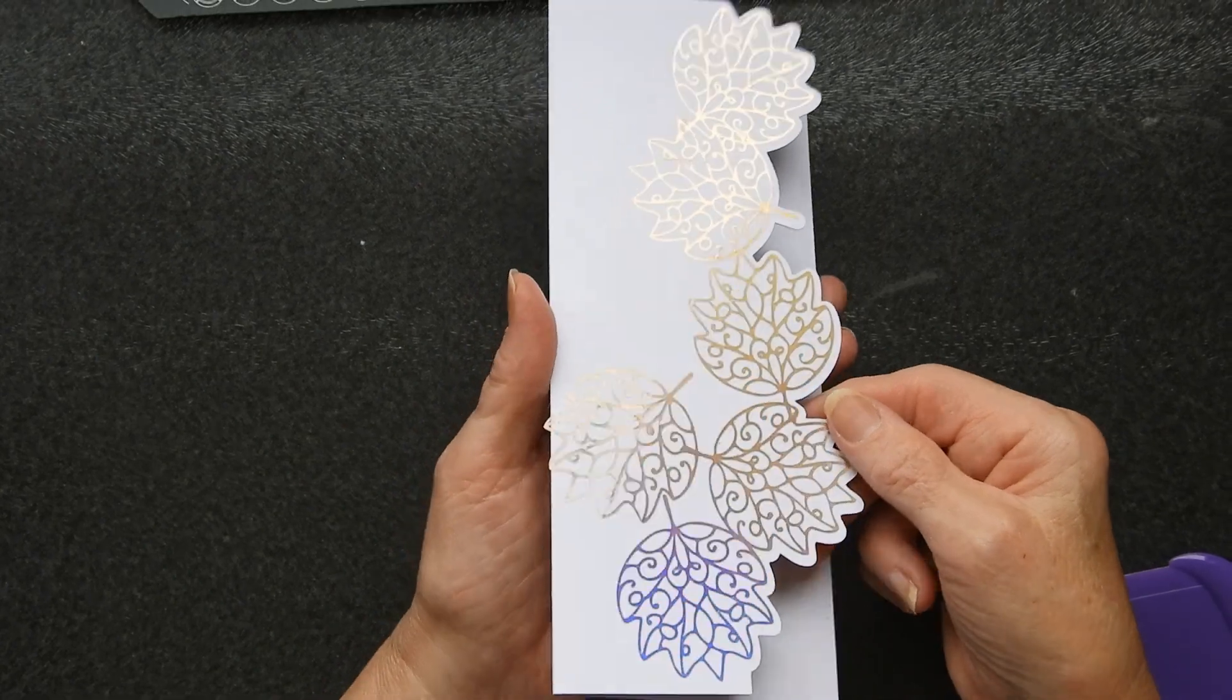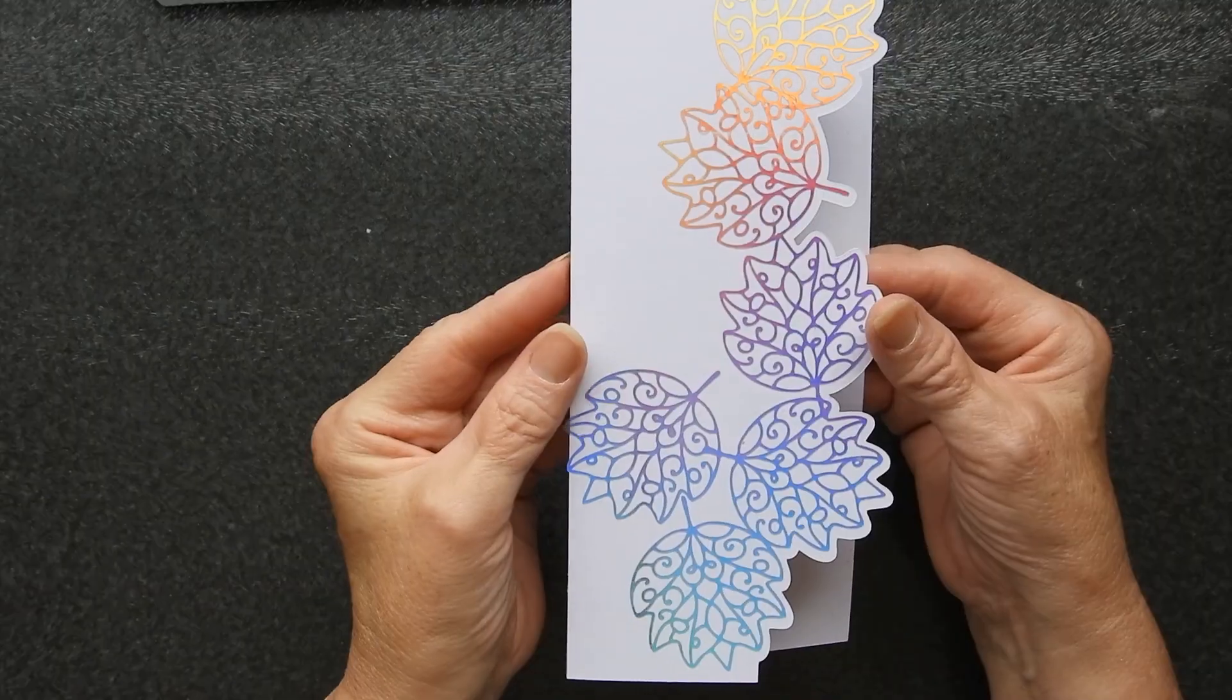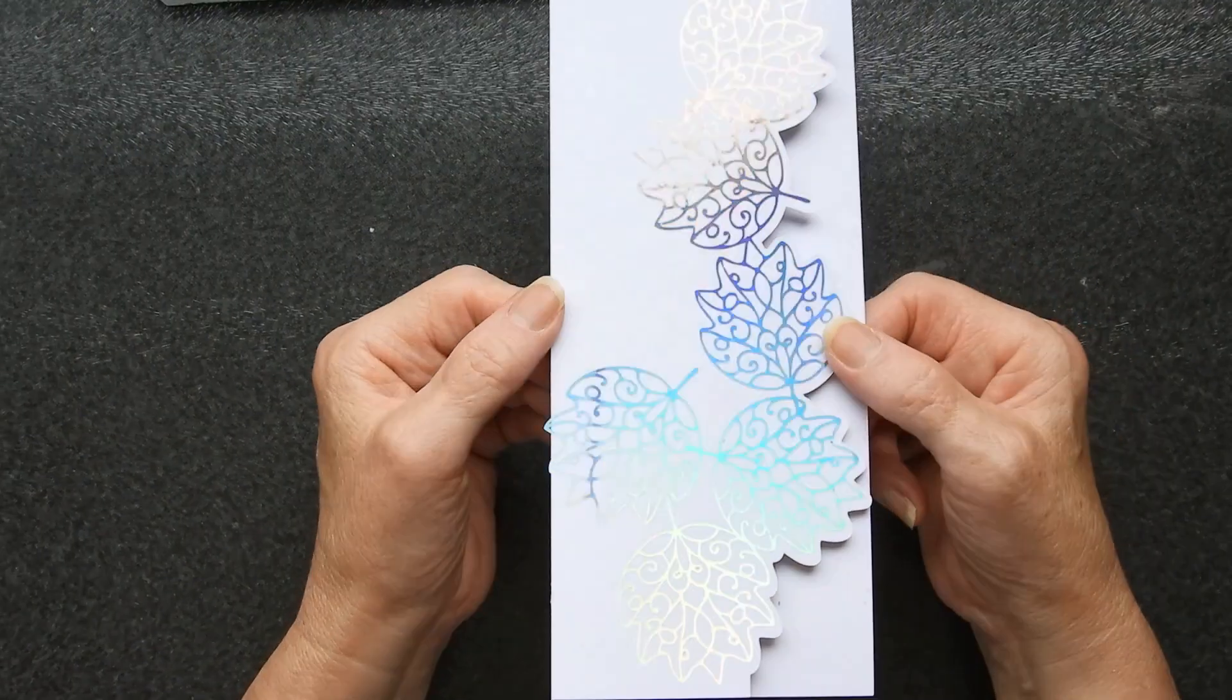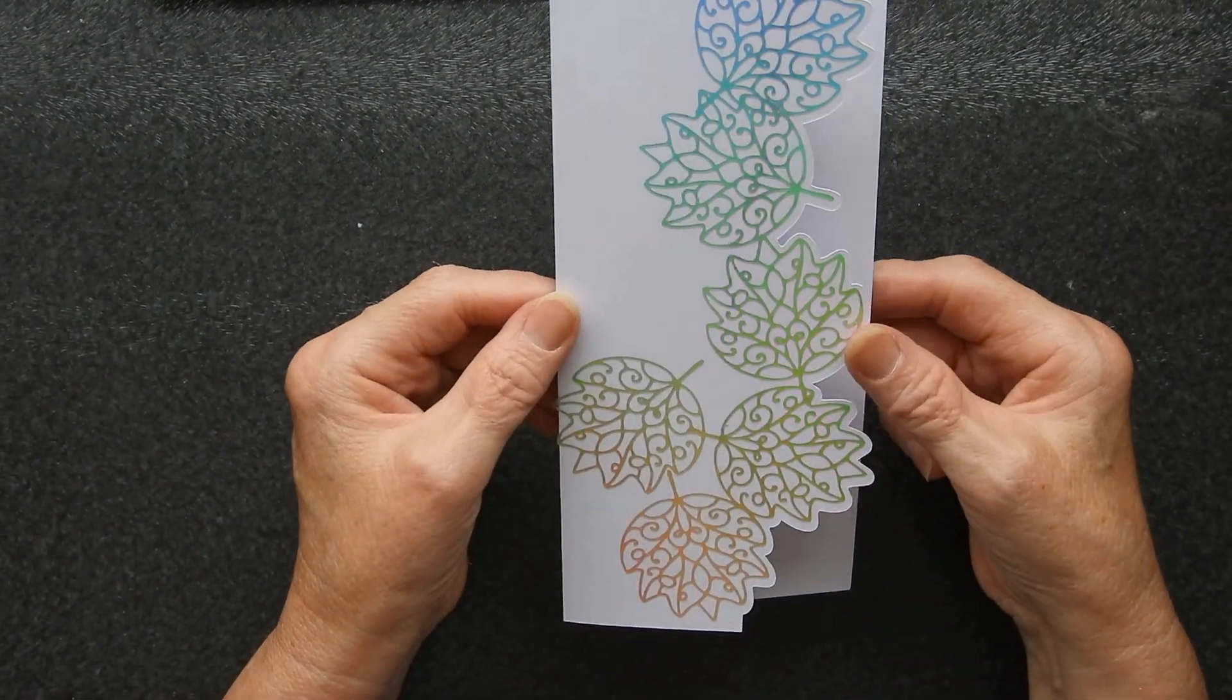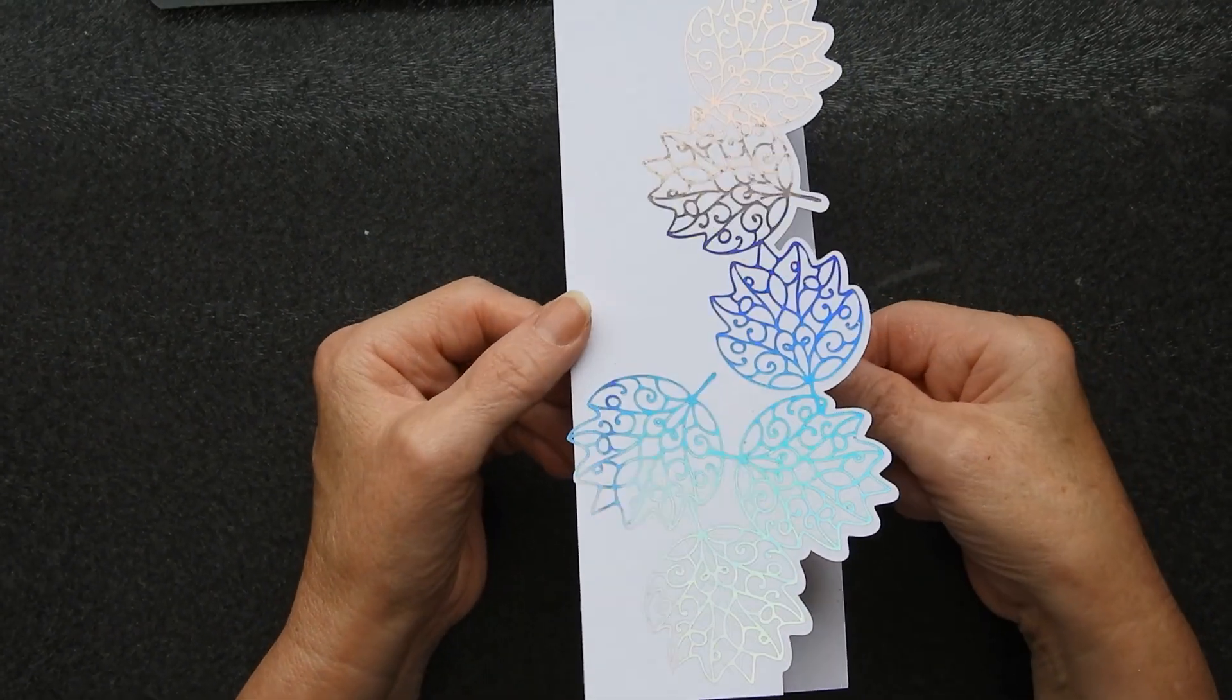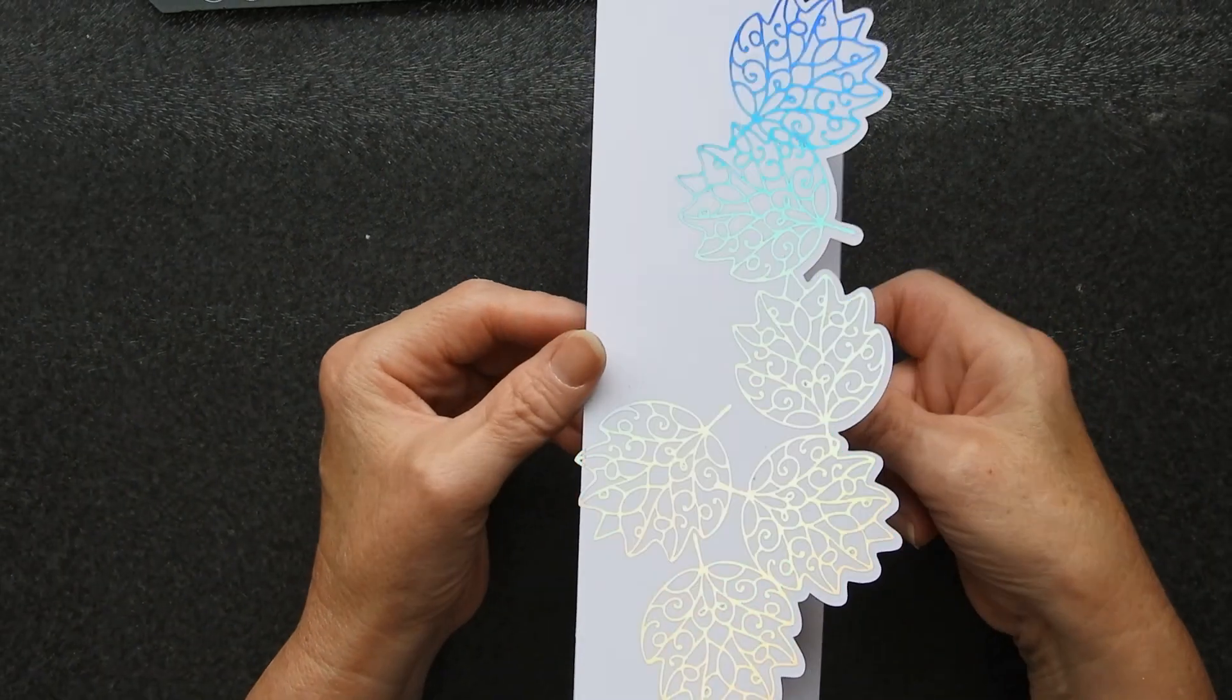And there I have my card. Very, very simple, very classic and very delicate looking. And I really quite like that. Now all you have to do is to put a sentiment inside. I think that works out really quite well with the holographic vinyl. I think it's a very nice, very clean card, a classic. And it was worth doing all that weeding to get that effect.